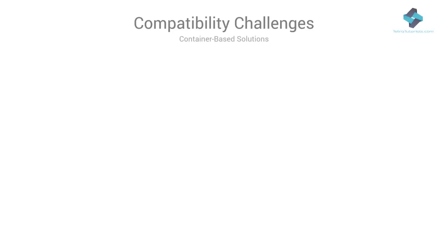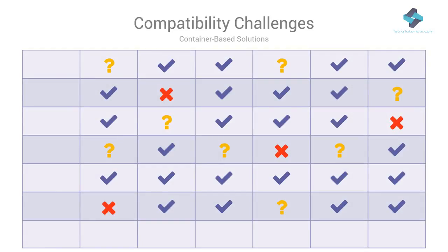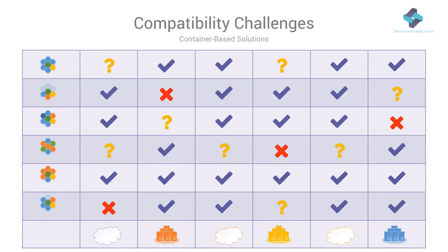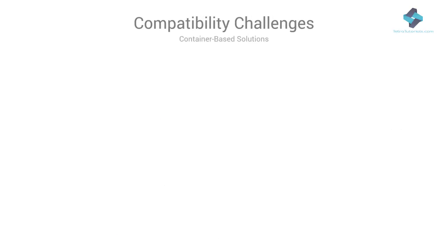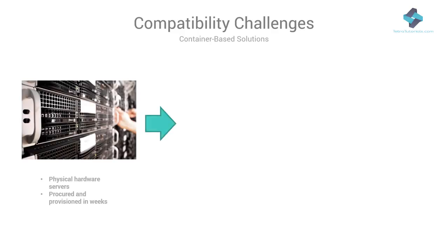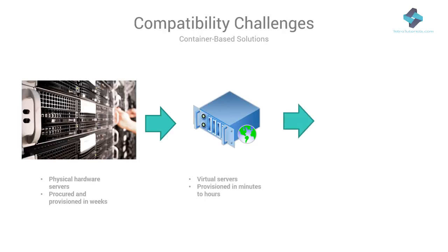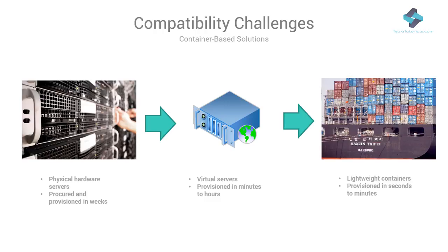Coming back to our original problem — the goal is to solve our compatibility matrix by moving away from the physical or virtual hardware. We can learn from the shipping analogy and do the same thing for software. Just as we moved away from physical servers to virtual servers, we start moving closer to these tiny little software containers, which can contain all our code and deploy it directly to our target environments in the exact same configuration as it ran in our development workstations.